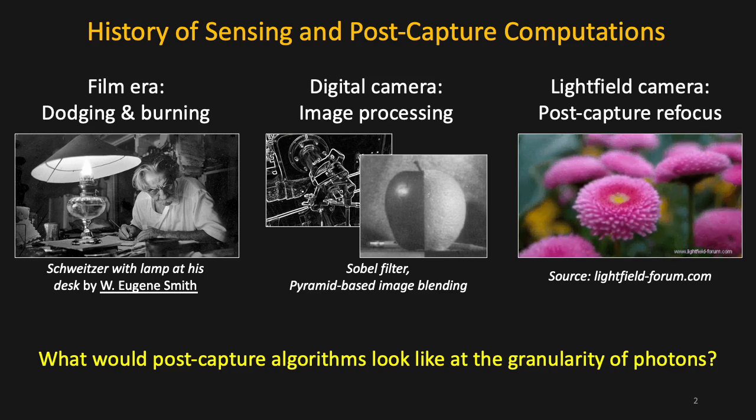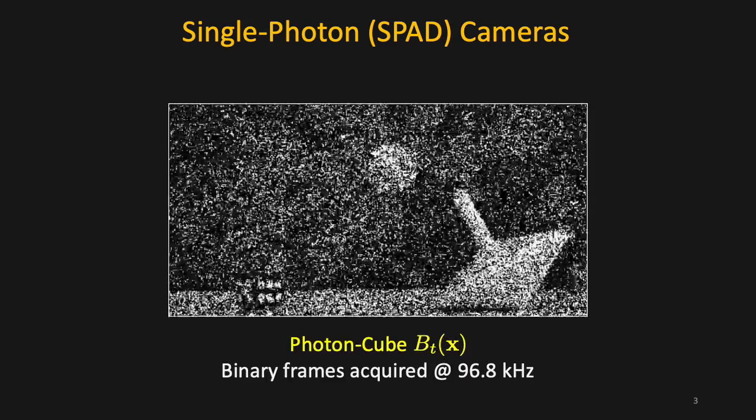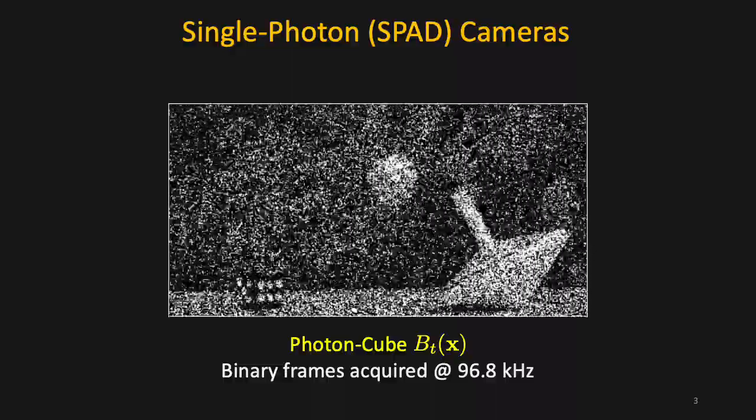What would post-capture processing look like at the finest possible granularity of light, which is at the photon level? We consider single photon cameras such as single photon avalanche diodes, or SPADs, which can capture individual photons at extremely high speeds, producing a temporal sequence of binary frames called a photon cube.